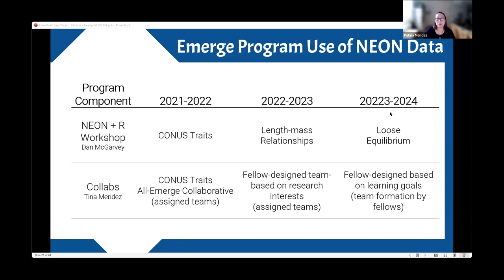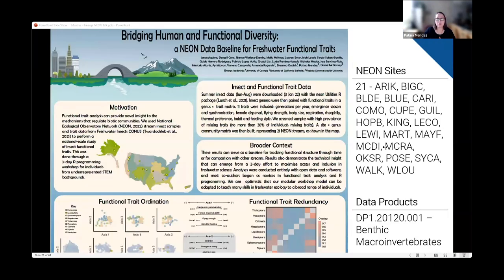In year one, the project focused on traits and trait diversity, with each fellow contributing a site-level piece of code. In the visual scientific communication workshop, Dan built the structures so fellows could work on posters, learn to display information, and make effective presentations. The result was a poster that fellows presented at the SFS meeting and the Joint Aquatic Sciences meeting in summer 2021. The remaining projects are from year two and are much more team-oriented.